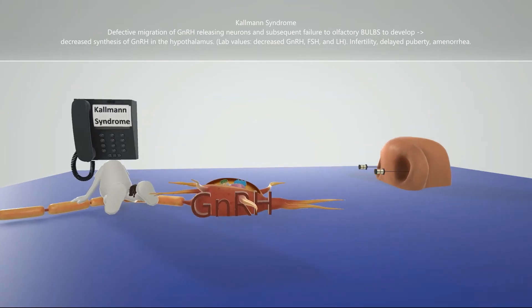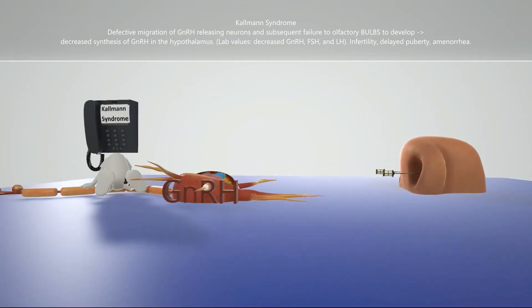represented by this nose over here, with the bulbs coming out of the nostrils, which are small. They're very small because they're not developing properly. This helps us remember the failure of the olfactory bulbs to develop, and this leads to the anosmia seen in Kallmann Syndrome.